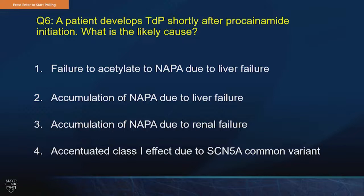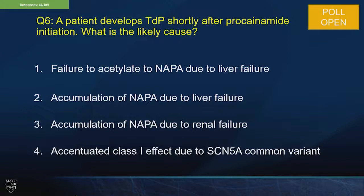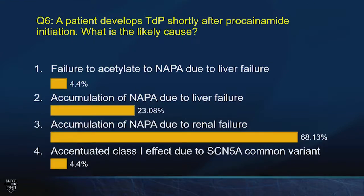Let's talk about metabolism and drug interactions. A patient develops torsade shortly after starting procainamide in the ICU — why? Procainamide is a class 1A agent, but procainamide is acetylated in the liver to N-acetylprocainamide (NAPA), and that metabolite is renally cleared. If somebody has renal failure, NAPA accumulates, and you can get a toxicity that looks like a class 3 agent with torsade and QT prolongation. This is testable — it tests your ability to understand metabolism, excretion of metabolites, and the potential for proarrhythmia.